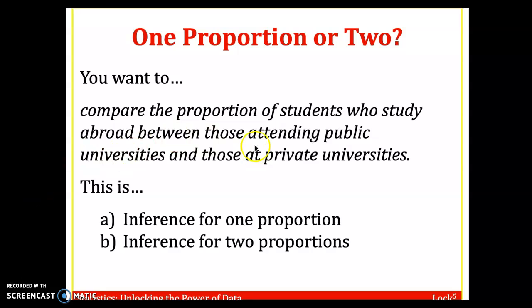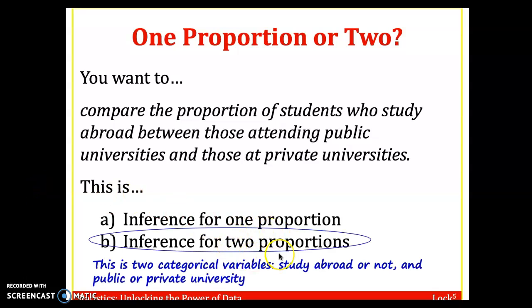What if we want to compare the proportion of students who study abroad between those attending public universities and those at private universities? Here, this is two proportions. We have two categorical variables: do you study abroad or not, and is there public or private university? Another way to think about this: if you have two proportions, you should be able to set up a two-way table, where the rows are one variable and the columns are another variable. Here, the columns could be study abroad or not, and the rows could be public and private university for the students.